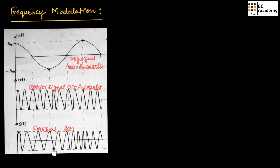Now these are the waveforms representing the FM signal. The message signal is m(t) = AM cos(2π fm t), and the carrier signal is c(t) = AC cos(2π fc t). The frequency of the carrier is altered with respect to the message signal. During the positive half of the message signal the frequency is high, and during the negative half the frequency is low — this is frequency modulation.